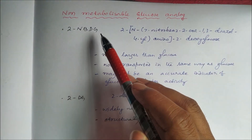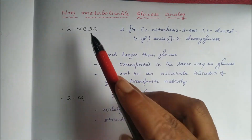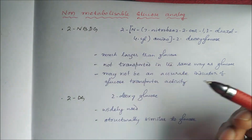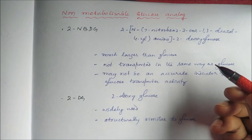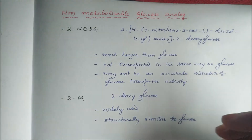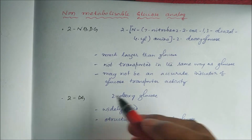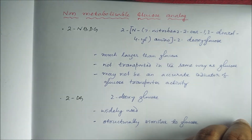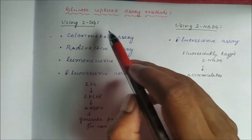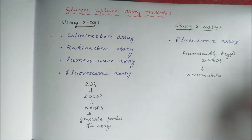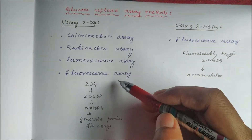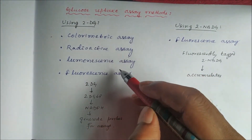2-NBDG is a much larger molecule than glucose, and because of this it is not transported in the same way as glucose and hence may not be an accurate indicator of glucose transporter activity, so it is not widely used nowadays. The most ideal and widely used analog is 2-deoxyglucose (2-DG) — a simple molecule structurally similar to glucose. Using 2-DG, we can have four different methods: colorimetric assay, radioactive assay, luminescence assay, and fluorescence assay.